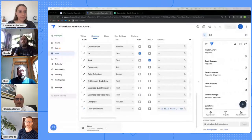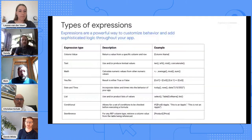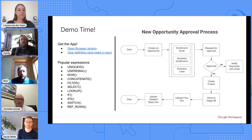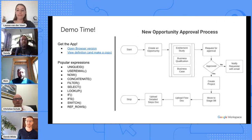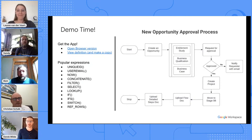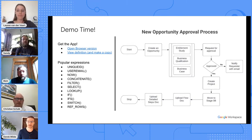Let's go ahead and jump into the demonstration. Hi everybody, I'm Derek. I'm an AppSheet customer engineer, part of the workspace team, and I'm going to walk you through some examples of what Sandy showed us in the slides. I'm going to be using an app that I created to manage an opportunity approval process. We're going to be mostly focused on the formulas, but it's nice to know the context.